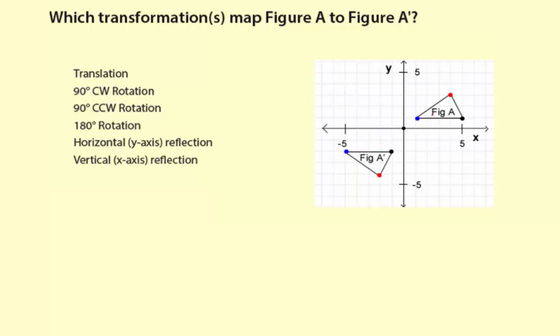So that means you have some type of reflection instead, because a reflection is going to keep the blue and the black orientation correct, depending on the type of reflection you do.